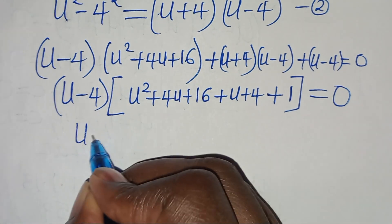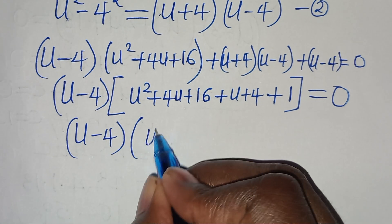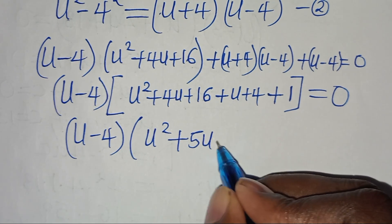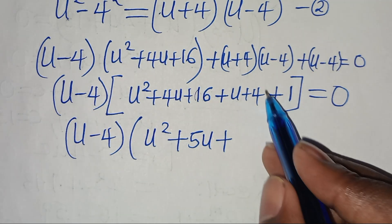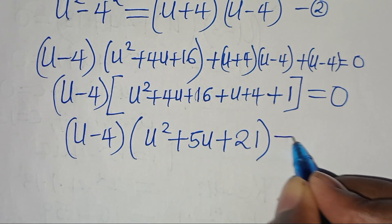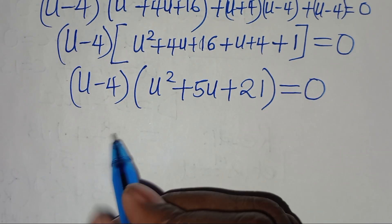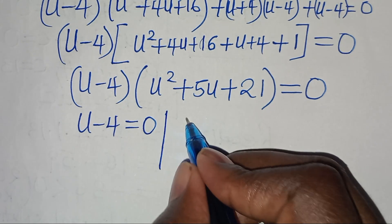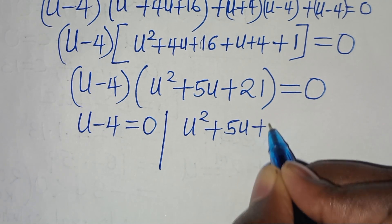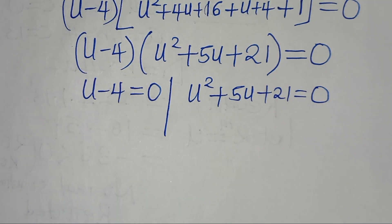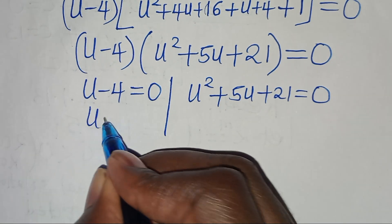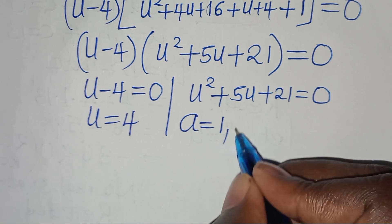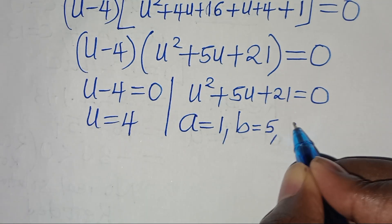So we have two parts: u minus 4 equals 0, and u squared plus 5u plus 21 equals 0. From the first part, u equals 4. The second part is a quadratic equation where a equals 1, b equals 5, and c equals 21.